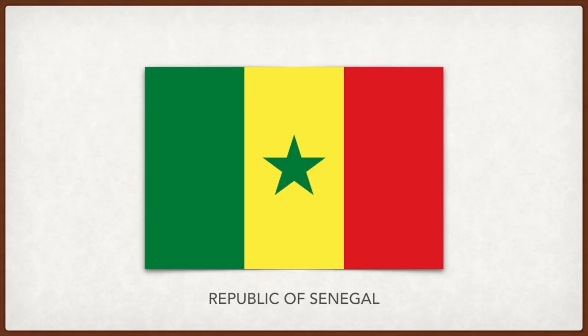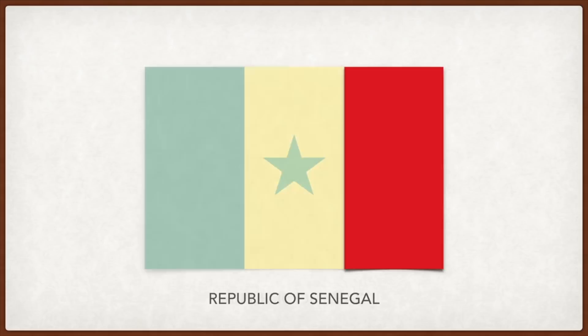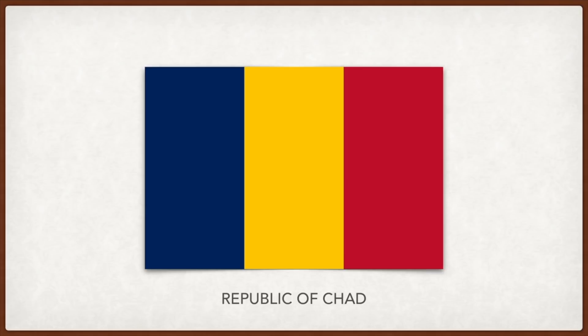Senegal: the green color and star represent Islam, yellow represents wealth, the arts, literature, and the intellect, and red represents blood and thus sacrifice and determination to fight against underdevelopment. Chad: the colors were a combination of the blue, white, and red of the French flag and the green, yellow, and red of the pan-African colors; the blue represents the sky and hope, yellow the sun and desert, and red signifies the bloodshed for independence.